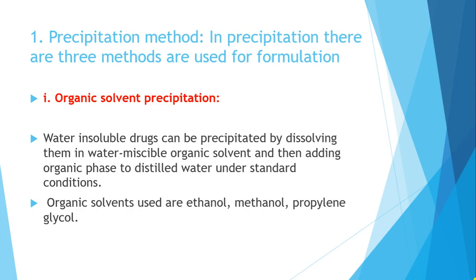Commonly used organic solvents are propylene glycol, ethanol, methanol, and polyethylene glycol. This method is used when the drug is insoluble in water — in that case it is precipitated by dissolving it in a water-miscible organic solvent.